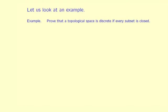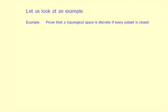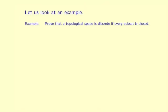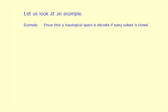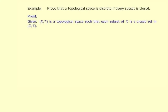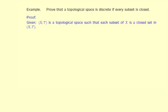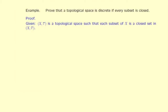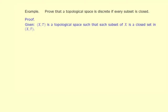So now let us consider an example. Prove that a topological space is discrete if every subset is closed. Step 1: Write down what we are given. What we are given is (X, τ) is a topological space such that each subset of X is a closed set in (X, τ).